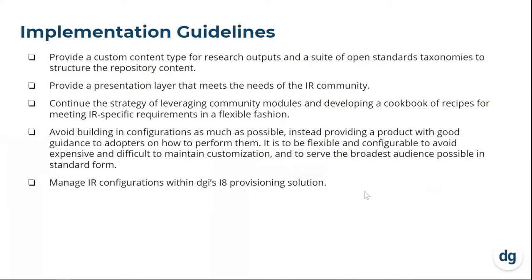Before we began, we came up with some implementation guidelines. We're going to provide a custom content type for research outputs that supports multi-file outputs, as that is the nature of them, and a suite of open-standards taxonomies to help structure the repository content. We've set up controlled vocabularies for many things like rights, access, licenses, typing of relationships, scholars, organizational units, and many more things we'll look at in more detail momentarily.